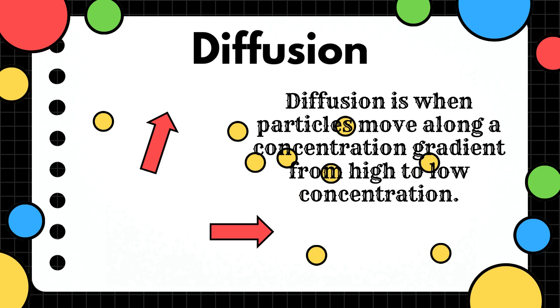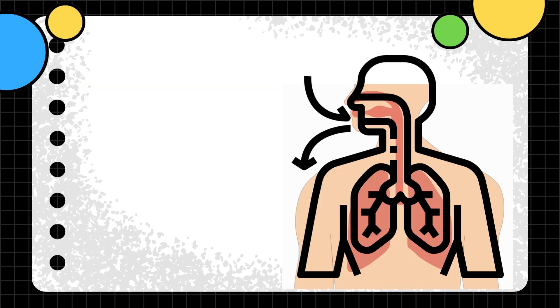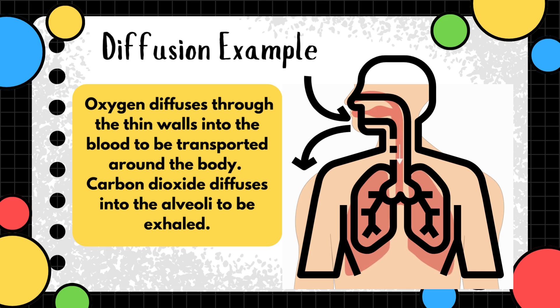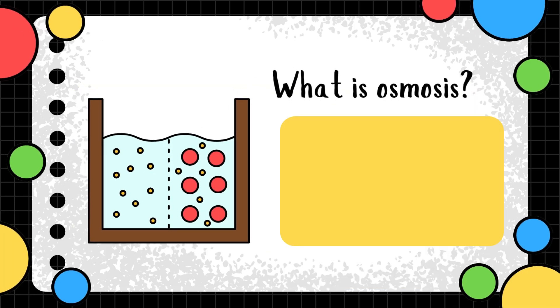Here is an example, like alveoli - air sacs in the lungs and the site for gas exchange. So oxygen diffuses through the thin walls into the blood to be transported around the body, and carbon dioxide diffuses into the alveoli to be exhaled. What is osmosis?